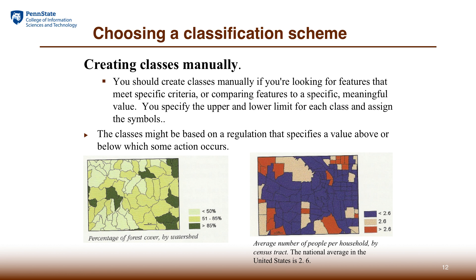A class can be defined by specifying the upper and lower limit of the attribute's value. If we want to make the class meaningful, we can manually specify those limits to ensure the range of value is captured in one class. This kind of manually defining classes applies to cases where you really know exactly the criteria you're going to apply and you know the specific value range you're looking for.